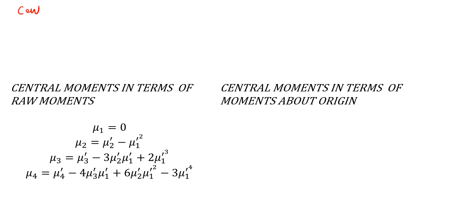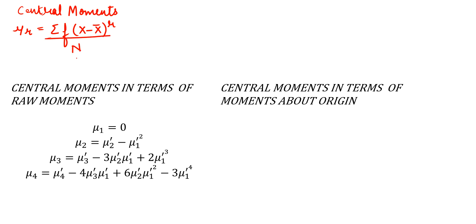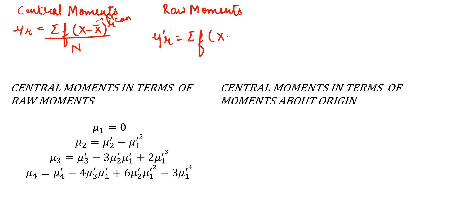First, let's simply write down the formulas. Central moments are represented by μr, which is equal to summation f(x − x̄)^r divided by n, where x̄ represents the mean. Raw moments can be calculated as μ'r, which is equal to summation f(x − a)^r divided by n, where a is an arbitrary constant.